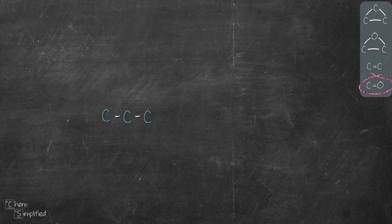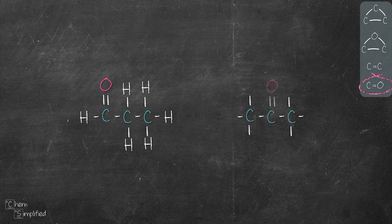Next we move on to C=O. Starting with 3 carbons in a straight row, we place our C=O on the first carbon and fill in the remaining hydrogens — this gives us the aldehyde. If we move the C=O to the second carbon and fill in with hydrogens, that gives us the ketone. We've seen both of these at the beginning of the video. And with that, we're done drawing all the isomers for C3H6O.